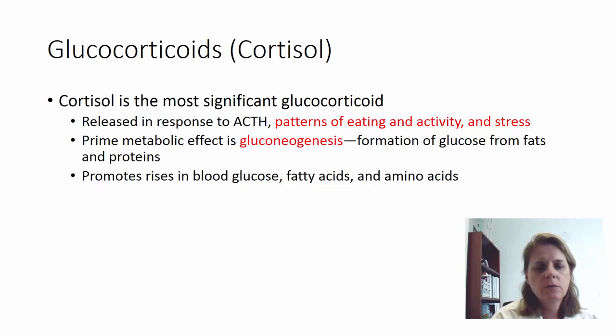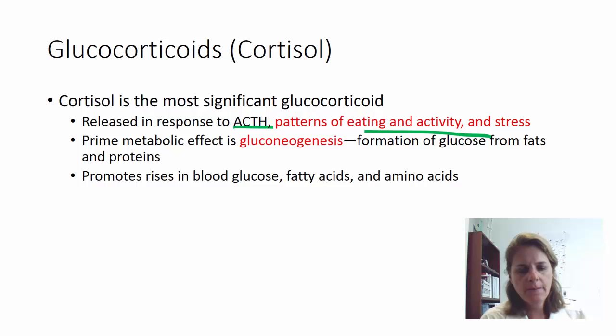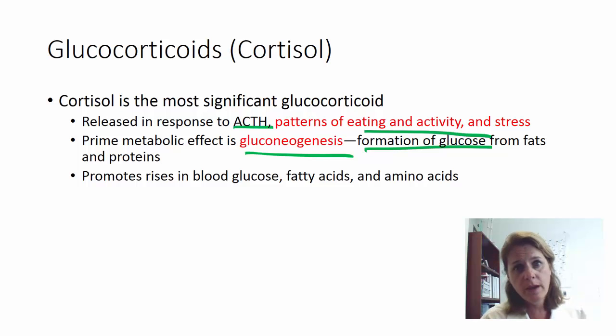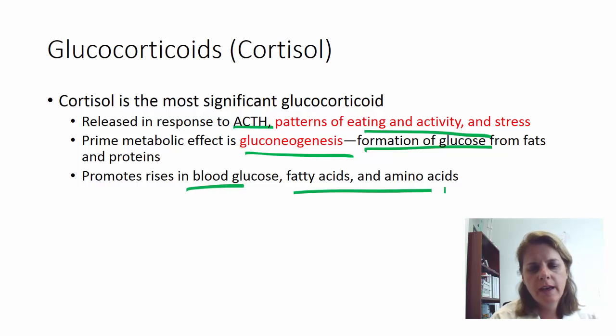Cortisol is released in patterns that mimic your daily eating, activity, and stress levels. Its main job is gluconeogenesis — the formation of glucose from fats and proteins. So cortisol can essentially turn fat and protein into sugar, raising blood sugar, fatty acids, and amino acid levels in the blood.